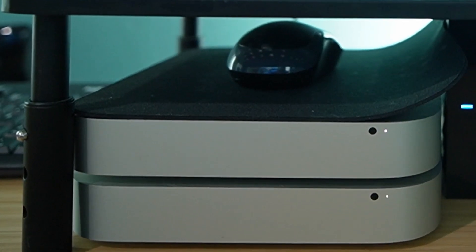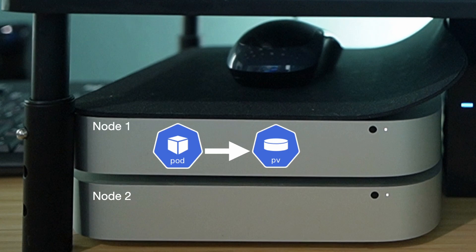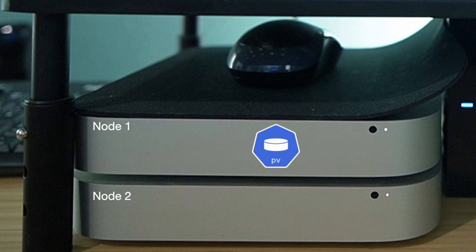This is called a host path volume. In the case of a single node cluster, everything is pretty simple. You know that if the workload restarts, it's guaranteed to start on your single node, and it'll be able to find the volume because it's on the same exact physical machine. When you move to two or more nodes, you almost immediately have issues with these simple host-based volumes.